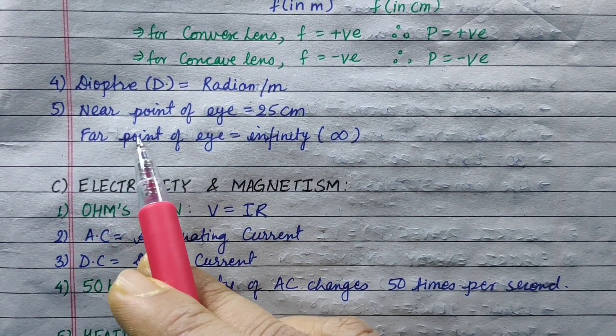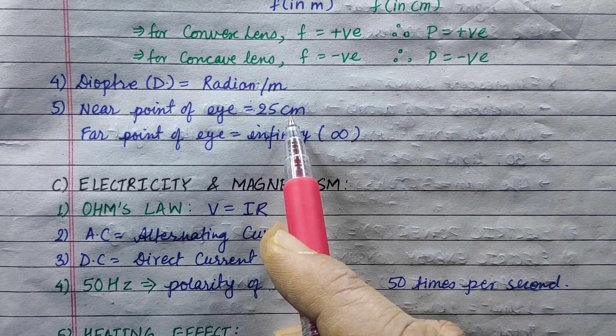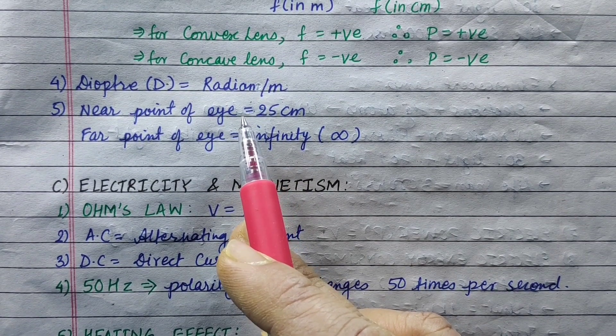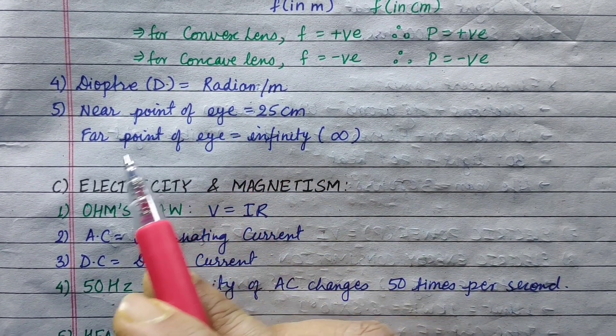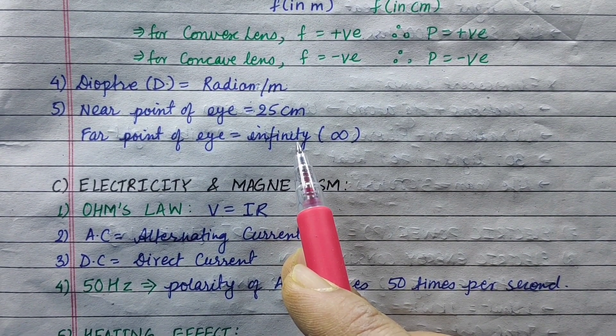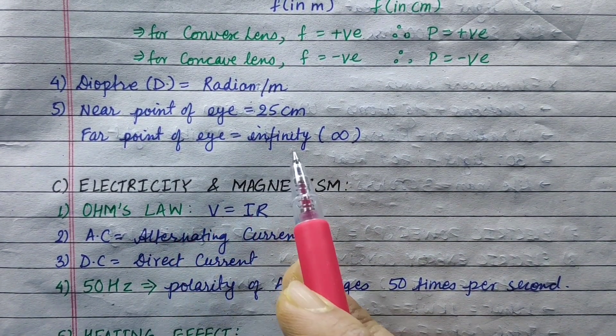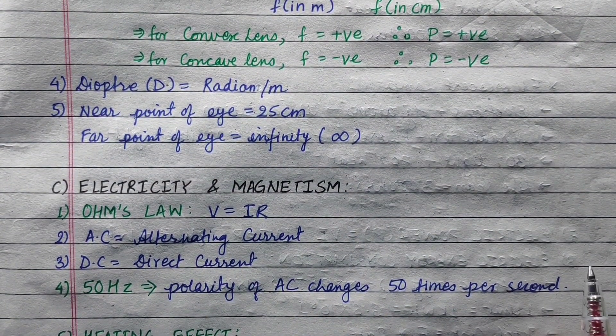For convex lens, focal length is positive and power is positive. For concave lens, focal length is negative and power is negative. Power of lens is in radian per meter. Near point of eye is 25 centimeters and far point is infinity.